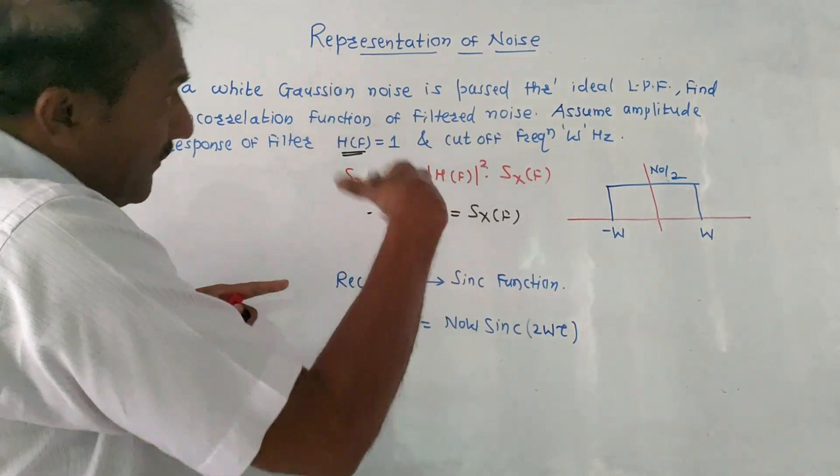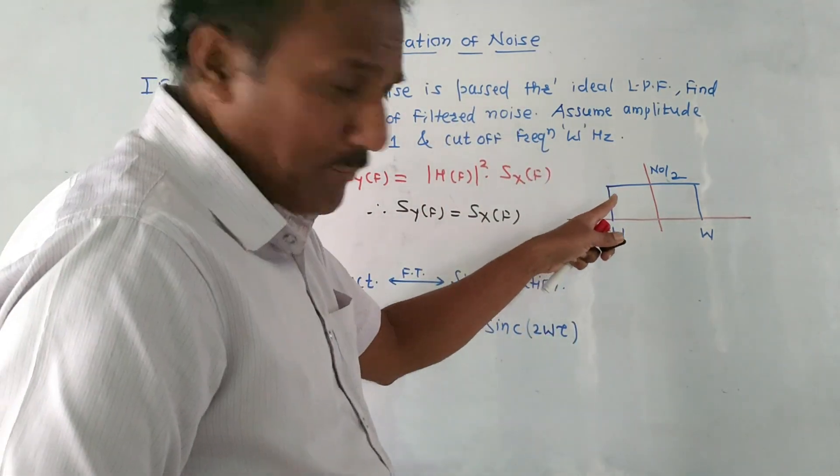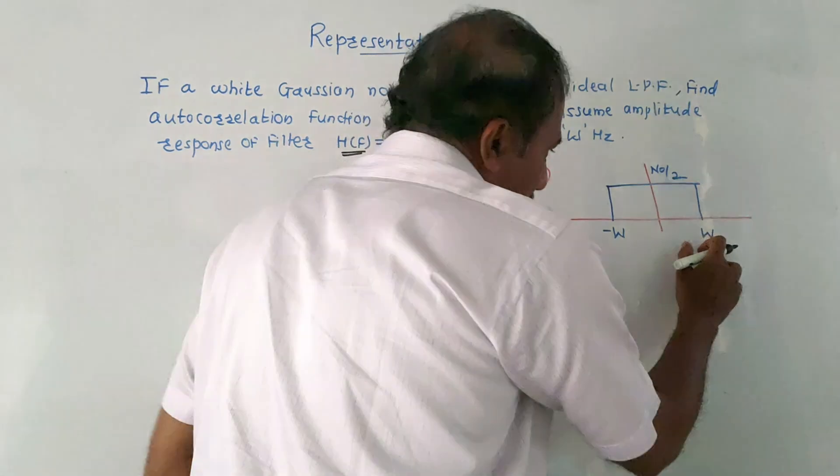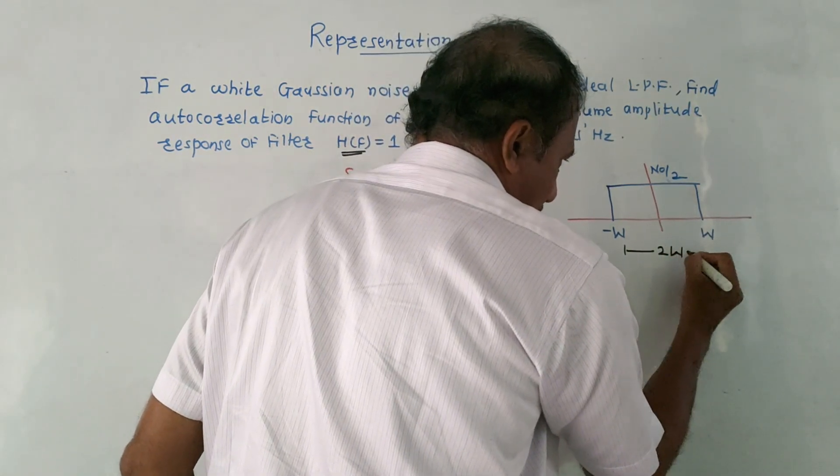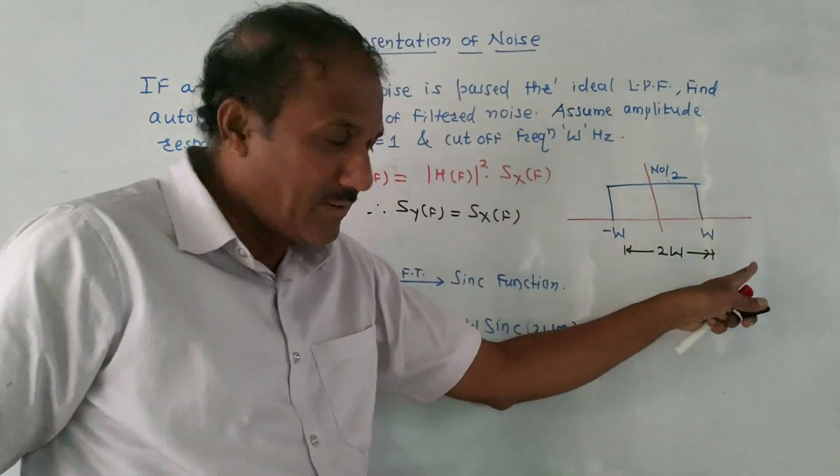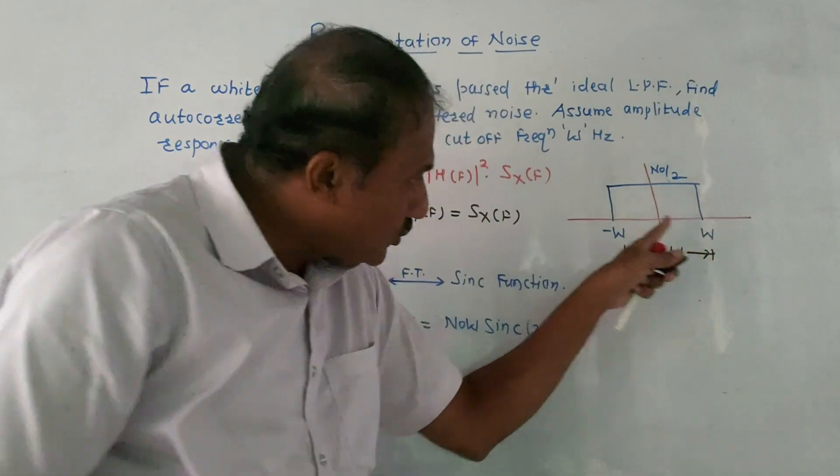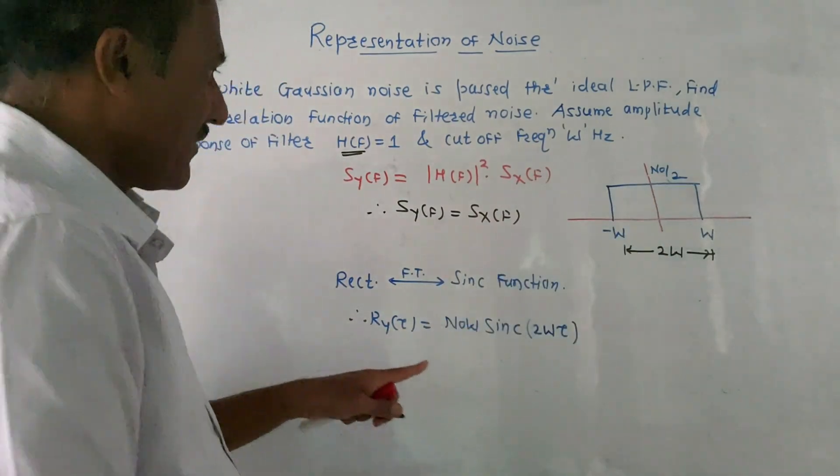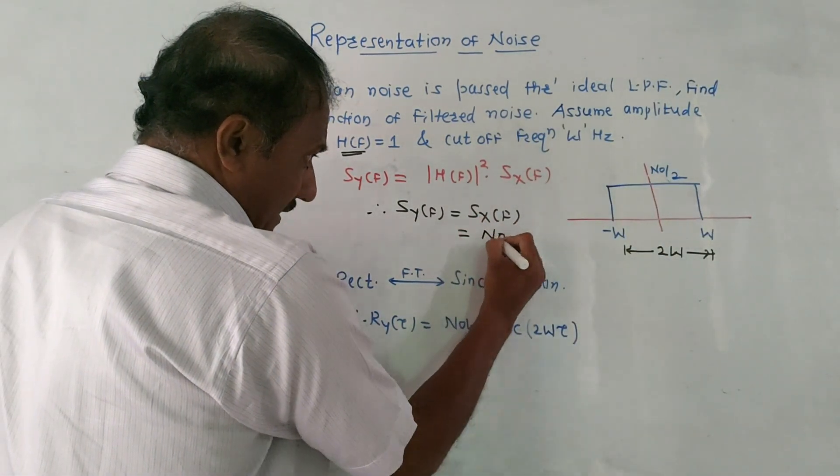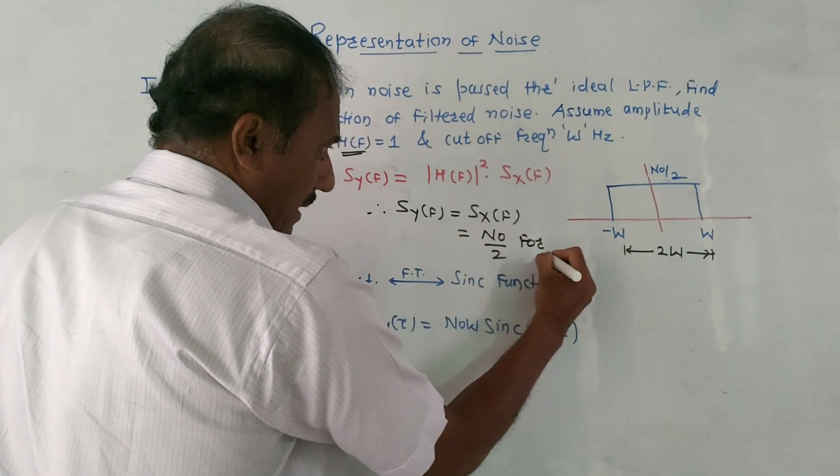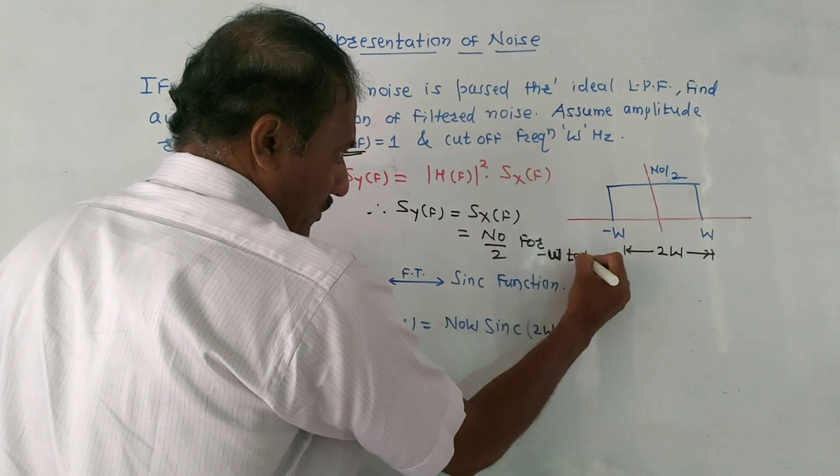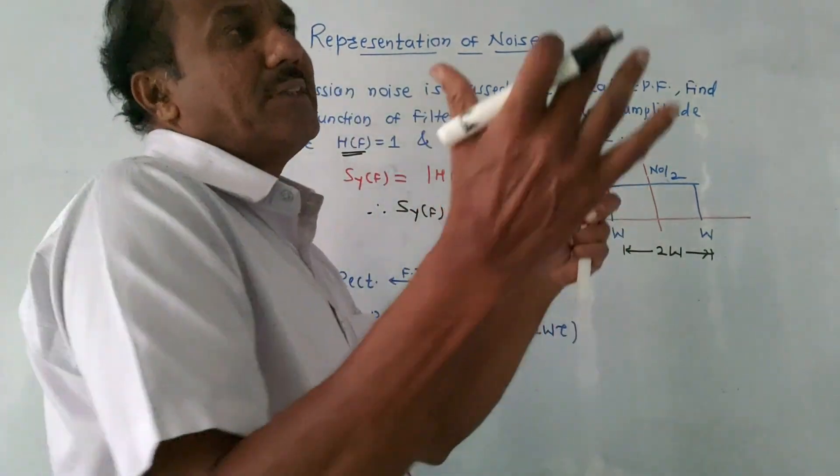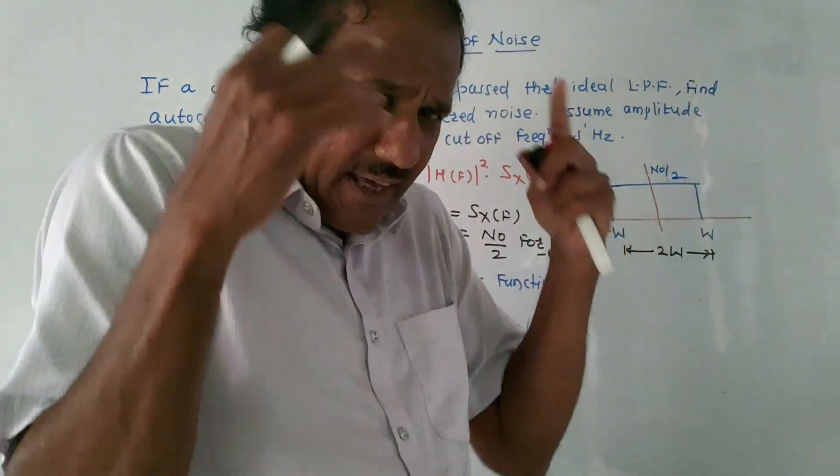We know that if it is a white gaussian noise, it is approximately same as the rectangular pulse whose width is from minus W to plus W - total width will be 2W, from minus W to plus W. Width is calculated as: this W highest value minus this minus W, minus minus become plus, so width is 2W. Its amplitude is N0 by 2. So this value is N0 by 2 from or for minus W to plus W, so for the frequency minus W to plus W.